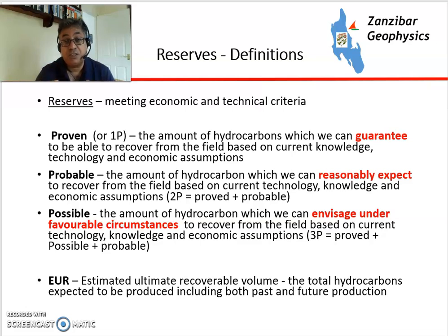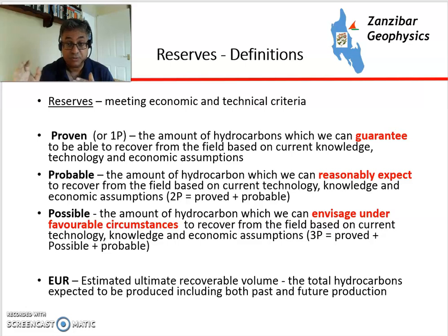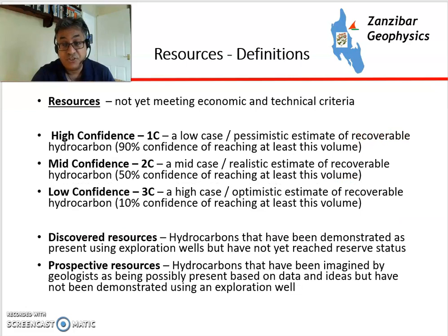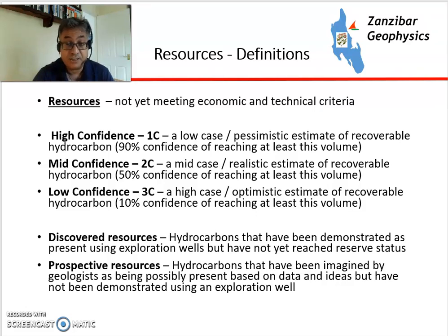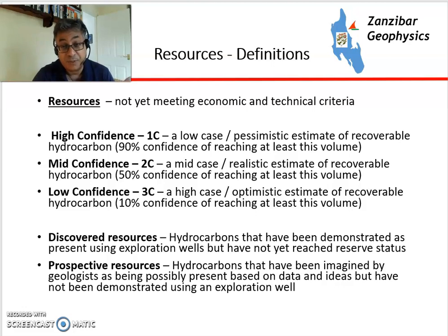EUR, or estimated ultimate recovery, is the total volume to be recovered from the field including both past production and reserves, which are the future volumes. In terms of resources, these are hydrocarbons that may or may not be there, split into two categories: discovered resources, which are hydrocarbons you've demonstrated exist with an exploration well and a well test, and prospective resources, which are figments of a geologist's imagination — and believe me, we geologists tend to be pretty imaginative.